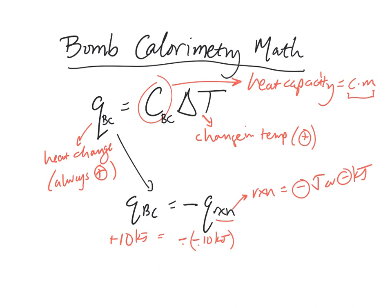So you'll note that there's only three components here: q, C, and delta t. So in any problem you're going to be given two of those three things.